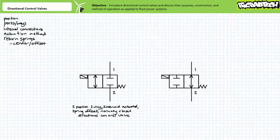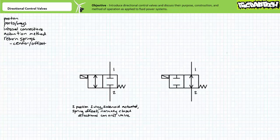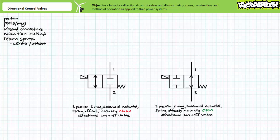Consider a subtle modification of this valve. Pause the lecture and see if you can determine the number of positions, the number of ways, the actuation method, and the deactivated state of this directional control valve. This directional control valve is almost identical to our first example — it is also a two-position, two-way, solenoid-actuated directional control valve. However, it is spring offset into a normally open position. In the absence of an electrical pilot signal, fluid can flow. In the presence of an electrical pilot signal, fluid flow is blocked.